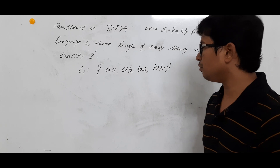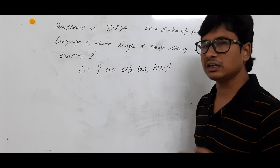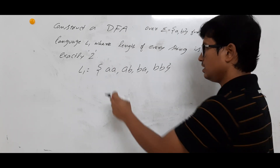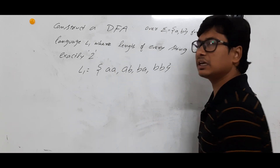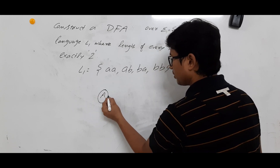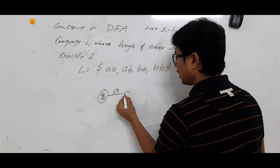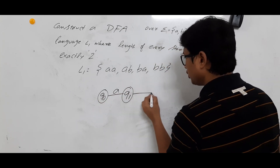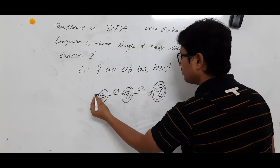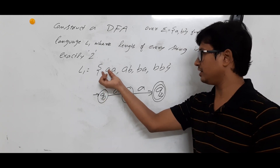Now I want to construct the DFA. First let me construct the skeleton DFA by taking the smallest string — I'll use 'aa'. From the initial state q0, on taking 'a' I will go to state q1. From q1, on taking 'a' I will go to state q2.